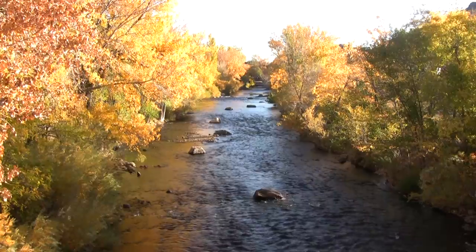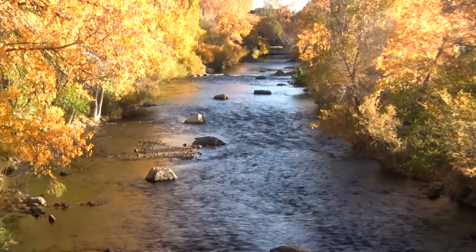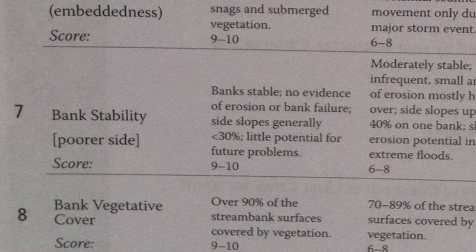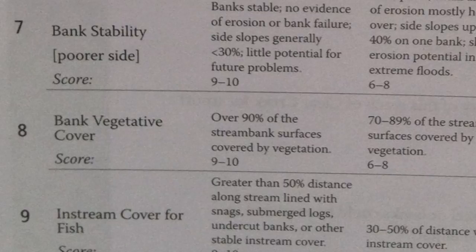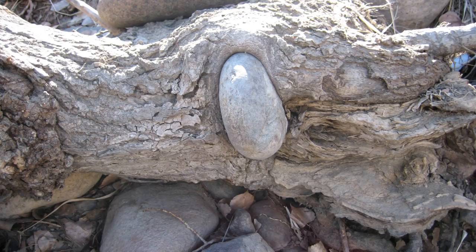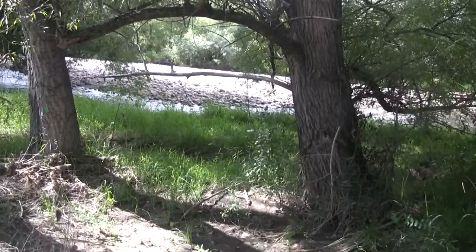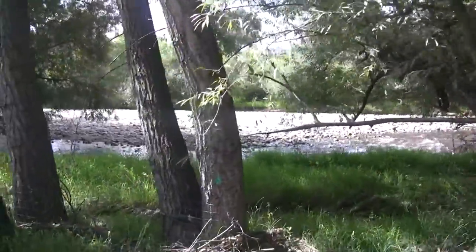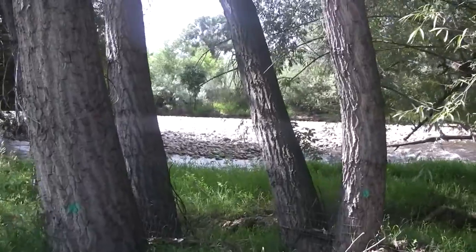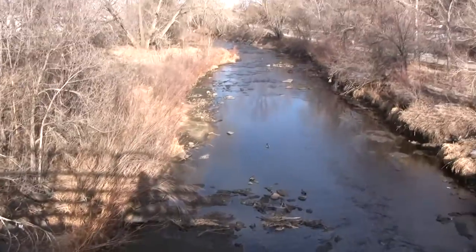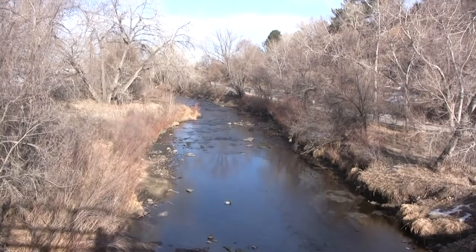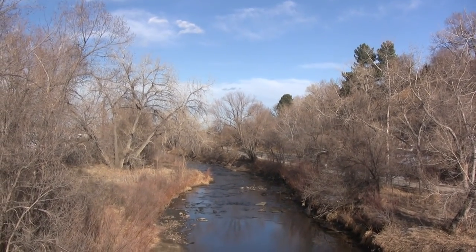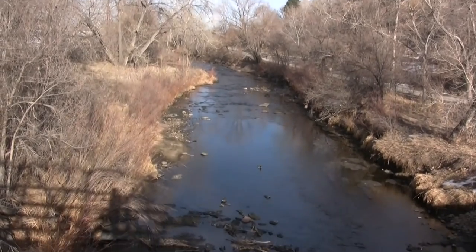The seventh parameter is bank stability. As you look up and down the reach of your stream, how much of the banks do you consider to be actively eroding away? Bank stability is related to the eighth parameter, bank vegetative cover — roots hold the fine sediments in place. How much of our banks have vegetation of any kind: grass, shrubs, trees? A lot of the largest trees along the banks are exactly the same age as the conversion of the creek from a braided stream to a channelized flow — they were planted by engineers after the conversion so their roots would help stabilize the banks.